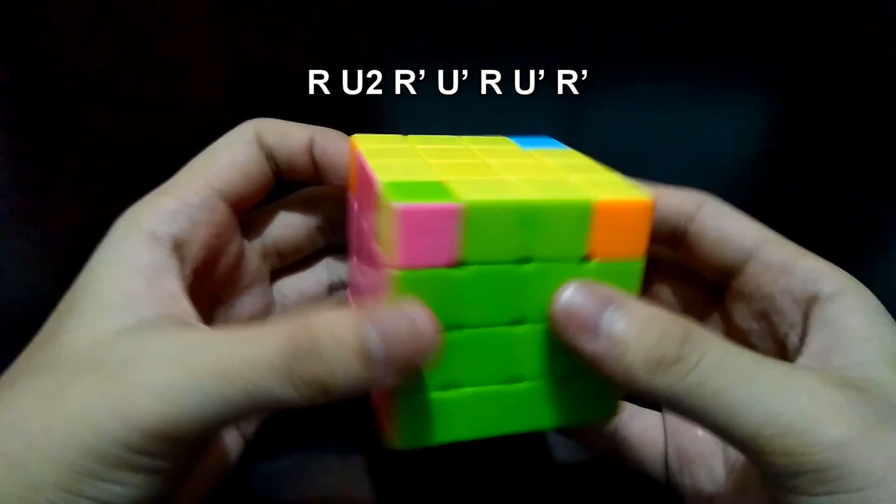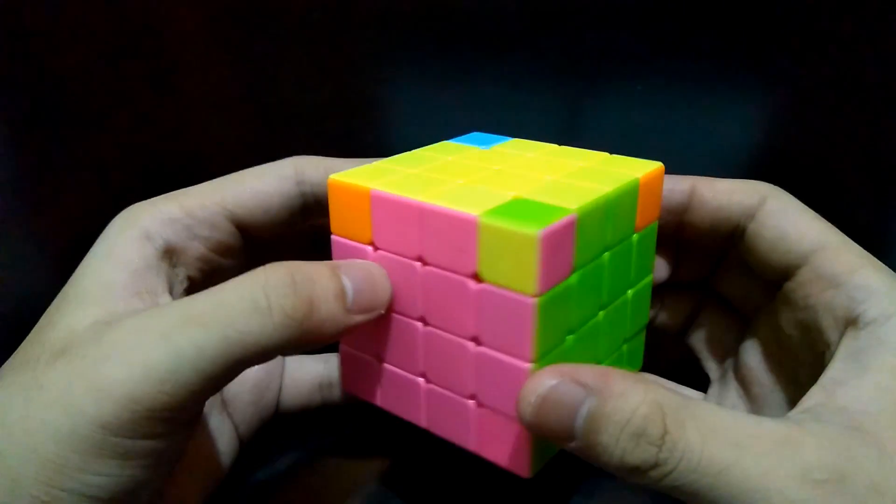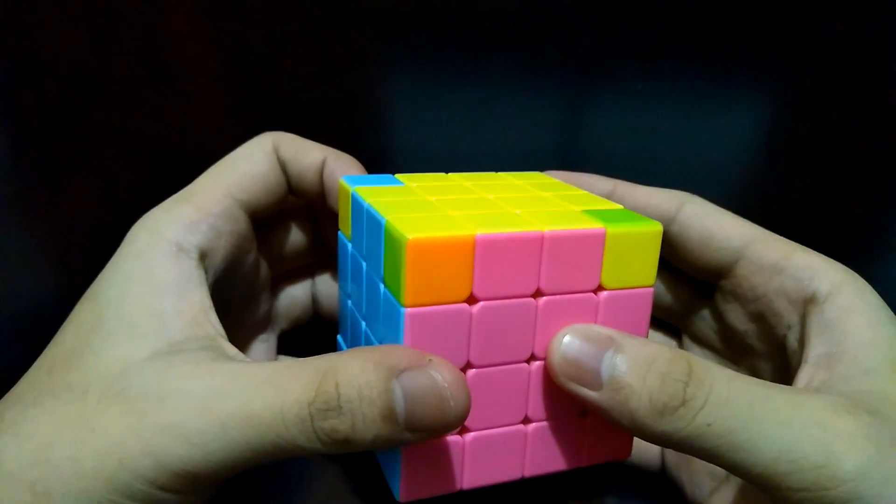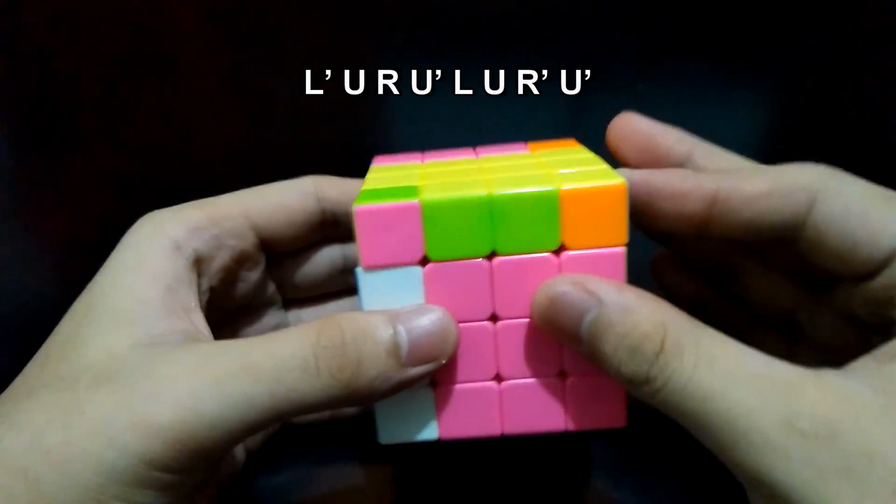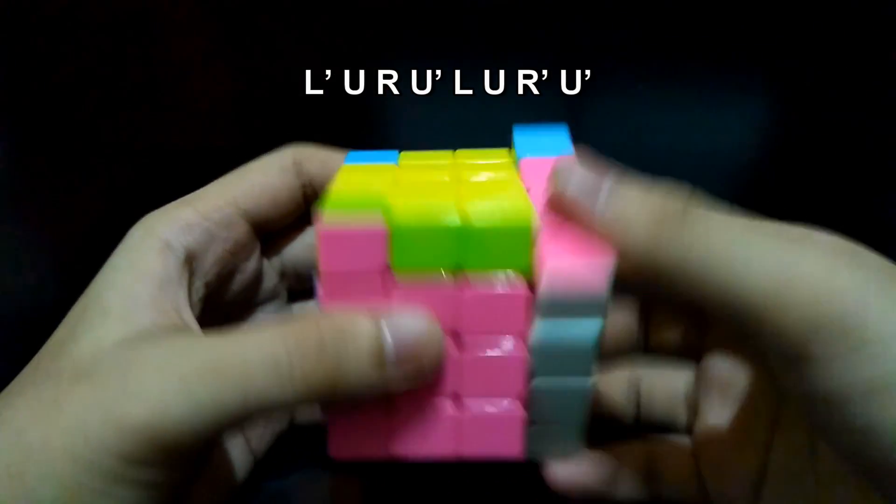Now we'll see if it works when we place the corners. This one's correct. Let's do the algorithm for placing the corners: Left prime, Up, Right, Up prime, Left, Up, Right prime, Up prime.